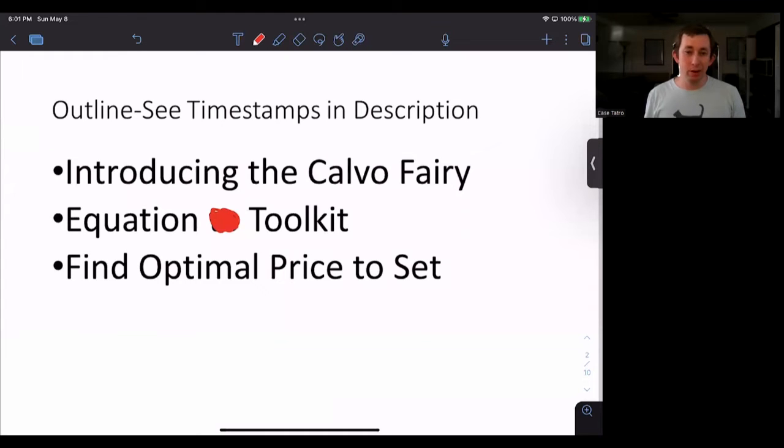Hi guys, welcome back to In Case of Econ Struggles. Welcome to another macro struggle. Today we're going to talk about the Calvo Fairy. We're going to talk about a little equation toolkit and then we are going to use that equation toolkit to find the optimal price that a firm wants to set in the Calvo model.